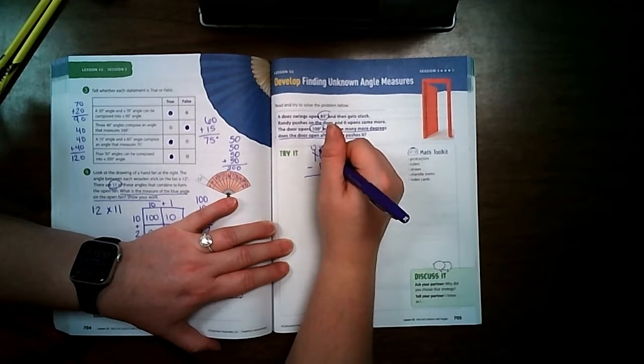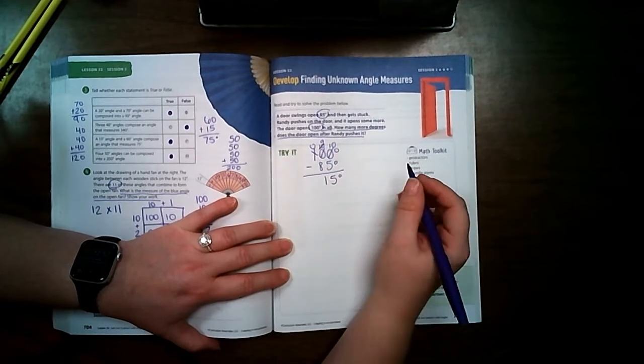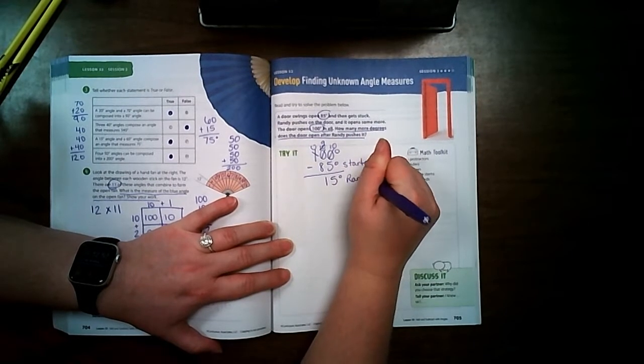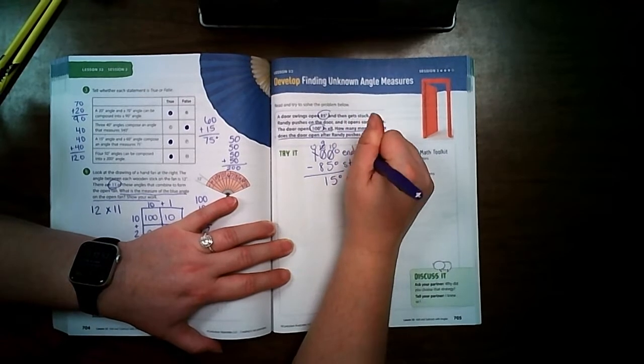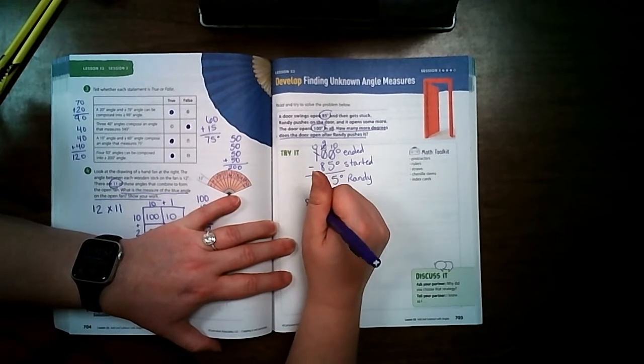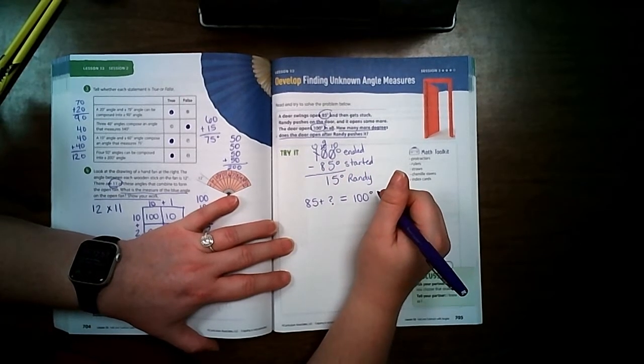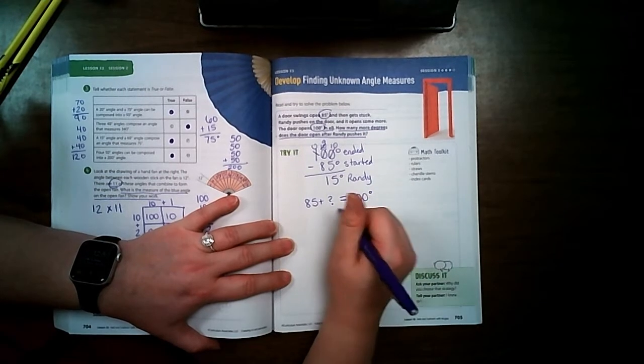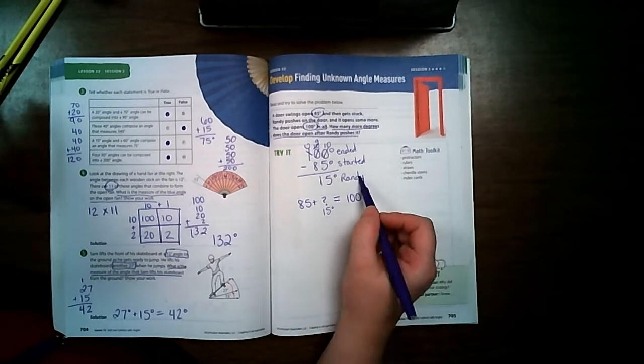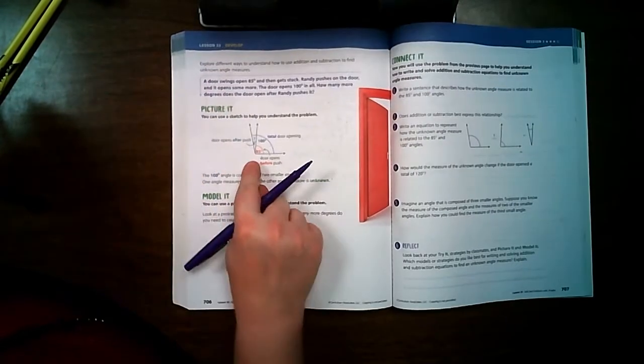So it started at 85, Randy pushed it 15 degrees and it ended at 100 degrees. Another way that you can write this is 85 plus I don't know equals 100 degrees, and then you can find that this is 15 degrees. So you can use subtraction or addition to be able to find the total amount that Randy pushed it open.